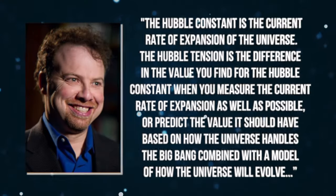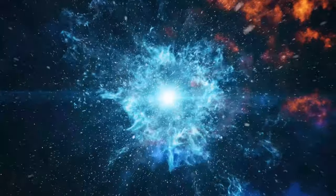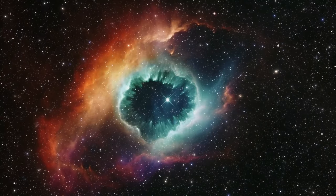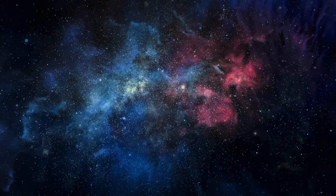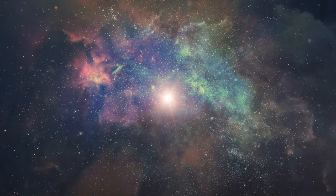Dr. Reiss further elaborated on this matter stating, the Hubble constant is the current rate of expansion of the universe. The Hubble tension is the difference in the value you find for the Hubble constant when you measure the current rate of expansion as well as possible, or predict the value it should have based on how the universe handles the Big Bang, combined with a model of how the universe will evolve. It is a problem because if these two ways don't agree with each other, it makes us think we are misunderstanding something about the universe.